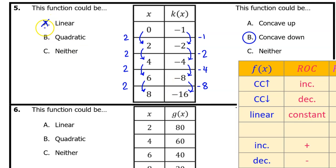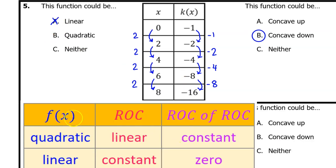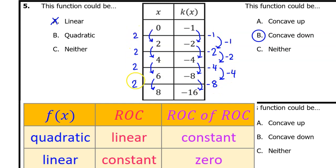According to this chart, if f of x is quadratic, then the rate of change of the rate of change will be constant. So we need to calculate and see how the rate of change is changing. We can see that the output values are changing by different amounts. These are not the rates of change, but since the input intervals are all the same, if the output values are changing by different amounts, we can say that the rate of change is changing by different amounts. In other words, the rate of change of the rate of change is not a constant — so this is not quadratic. That means it's neither.